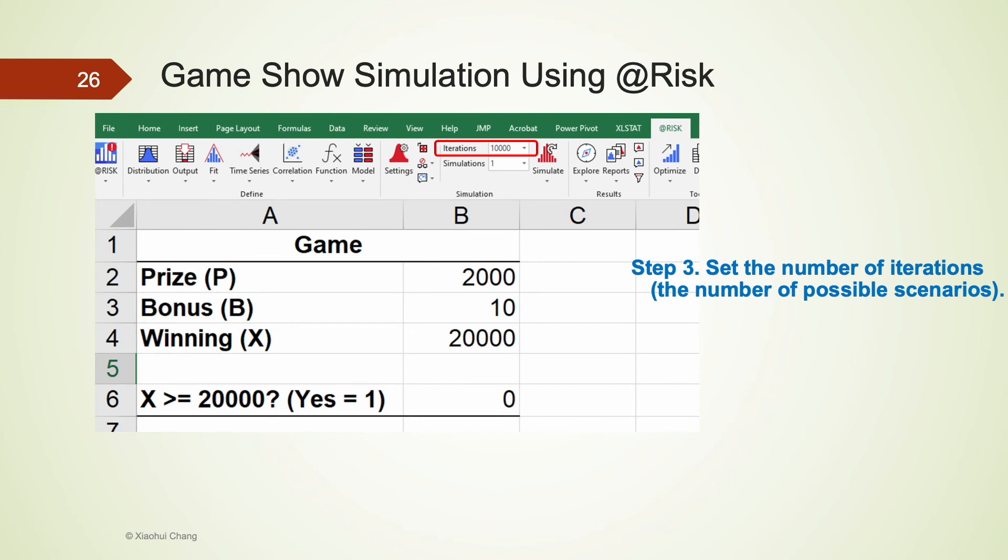In step three, we set a number of iterations or scenarios that we would like to simulate. For this game show example, I set the iteration to 10,000 times and leave the number of the simulation to one.